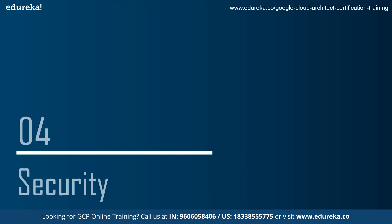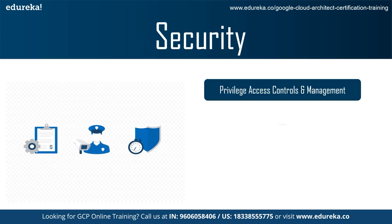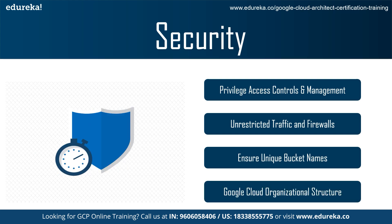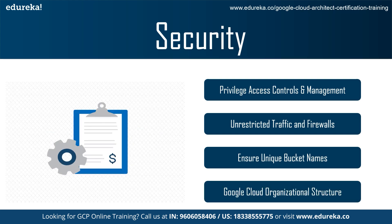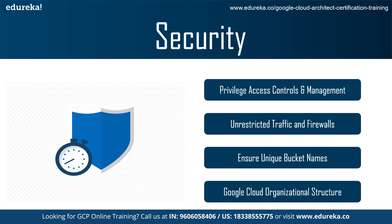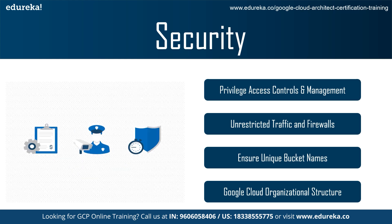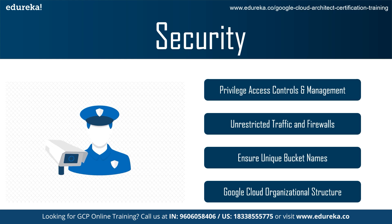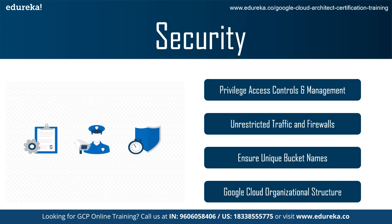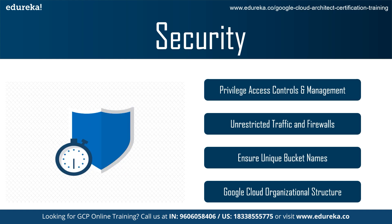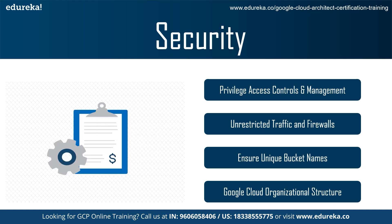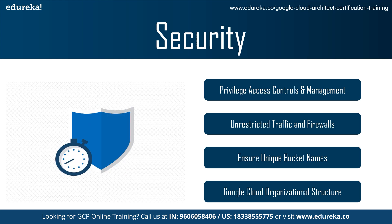Moving on to the next category: security. First, apply least privilege access controls via Identity and Access Management. The principle of least privilege is a critical foundation element in GCP security — it means only providing employees with access to applications and resources they need to properly do their jobs. Second, manage unrestricted traffic and firewalls. Limit the IP ranges assigned to each firewall to only the networks that need access, and use GCP's advanced VPC features to get granular with traffic by assigning targets by tag and service accounts.